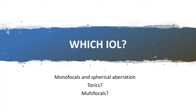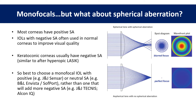Before we move on to formula choice, I'll just touch on lens choice. Monofocal lenses are the most commonly used and certainly what I would recommend in keratoconus. But what should we do about spherical aberration? While some SA can be useful for depth of focus, having too much can adversely impact quality of vision. Most normal corneas have positive spherical aberration, so we often implant lenses with negative SA — like a J&J Tecnis or an Alcon IQ — to optimise visual quality. But keratoconic corneas usually have negative SA, so if we implant our usually negatively aspheric lens, visual quality may well be impacted. It's probably best to go for a lens with either positive or neutral SA, like the Sensar series from J&J or the enVista from Bausch & Lomb.